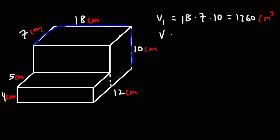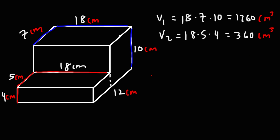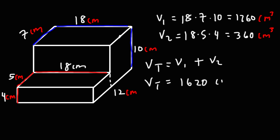Now let's calculate V2. For V2, the length will still be 18 centimeters. We have a width of 5 and a height of 4. So length times width times height: the width is 5, times height, which is 4. 5 times 4 is 20, times 18, that's 360. So it's 360 cubic centimeters. Now let's calculate the total volume, V1 plus V2: 1260 plus 360, that's going to give us 1620 cubic centimeters.